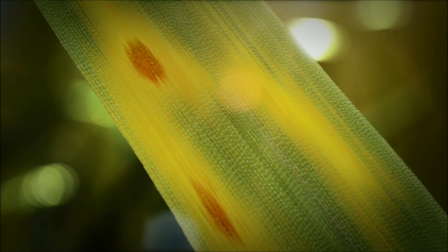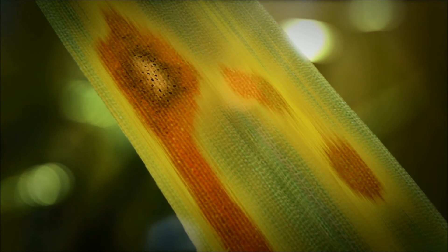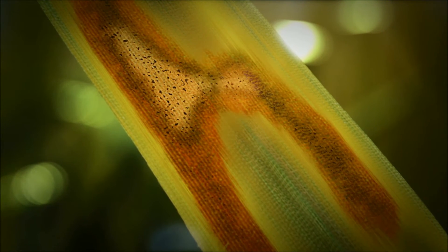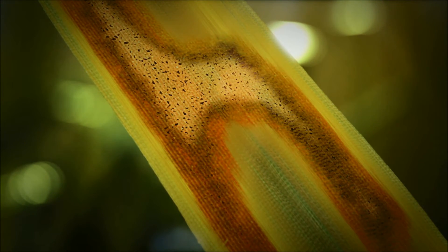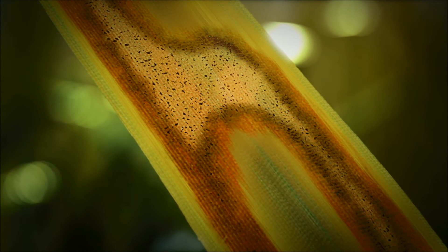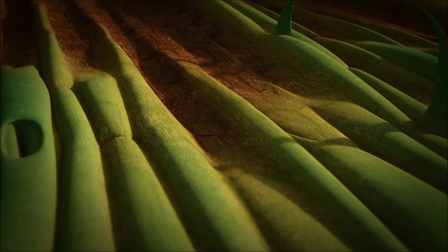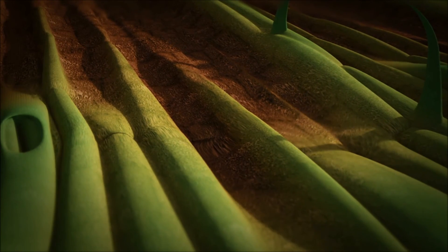The first external indications of disease start to appear. As more cells die, the leaf area available to absorb sunlight and carbon dioxide is reduced. Disruption of the leaf structure also leads to excess water loss.